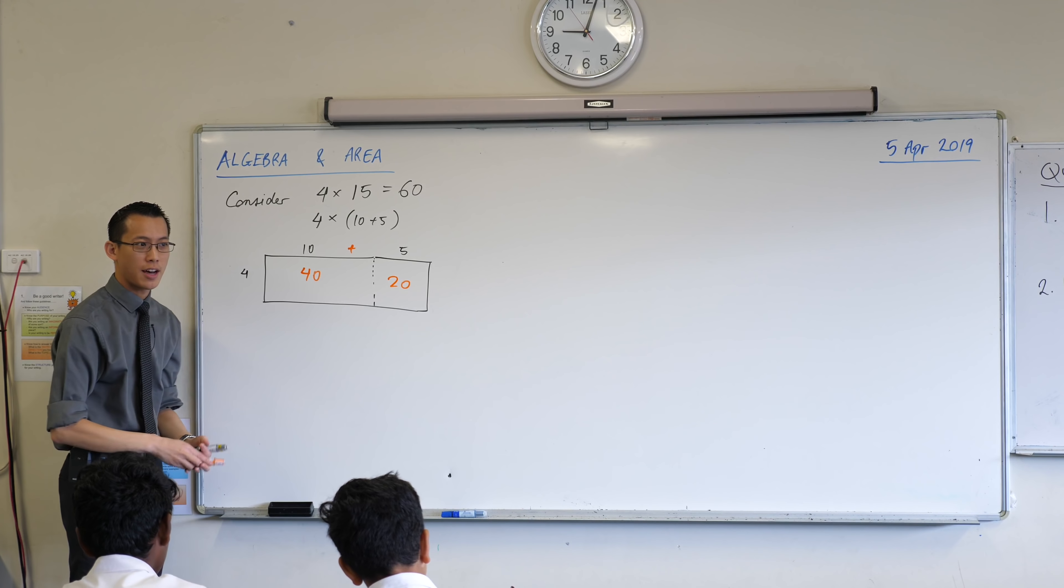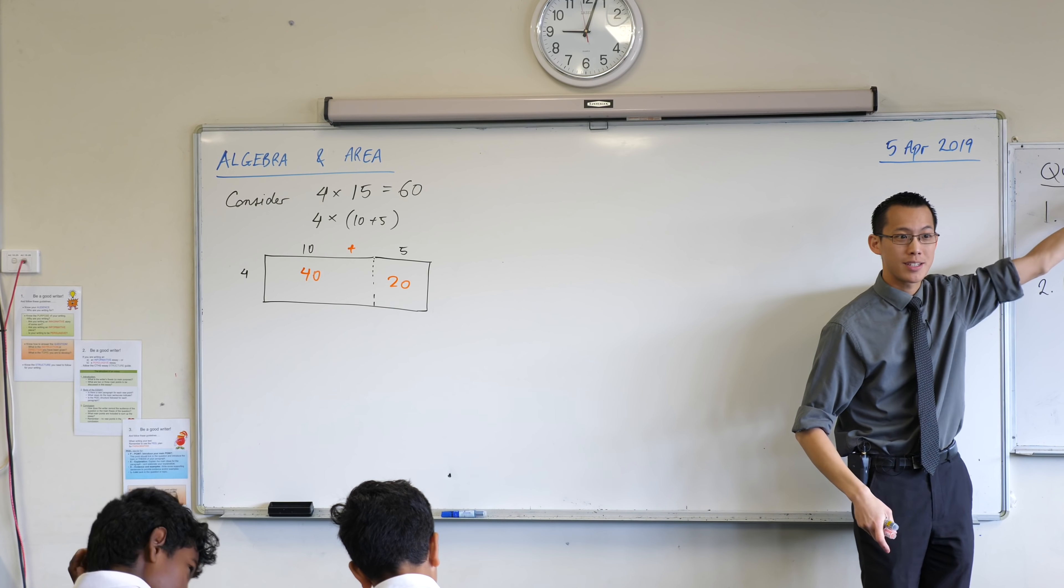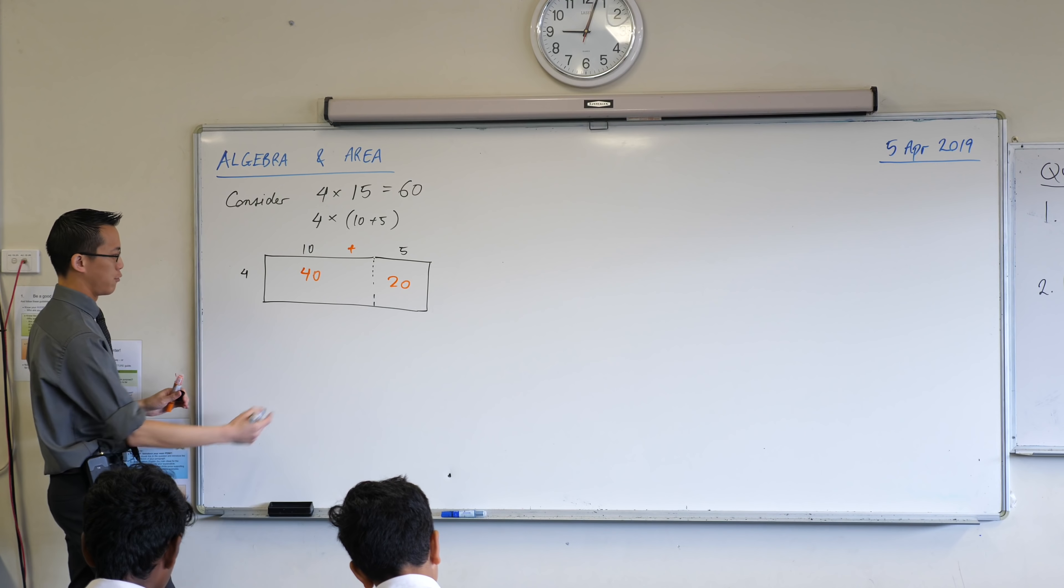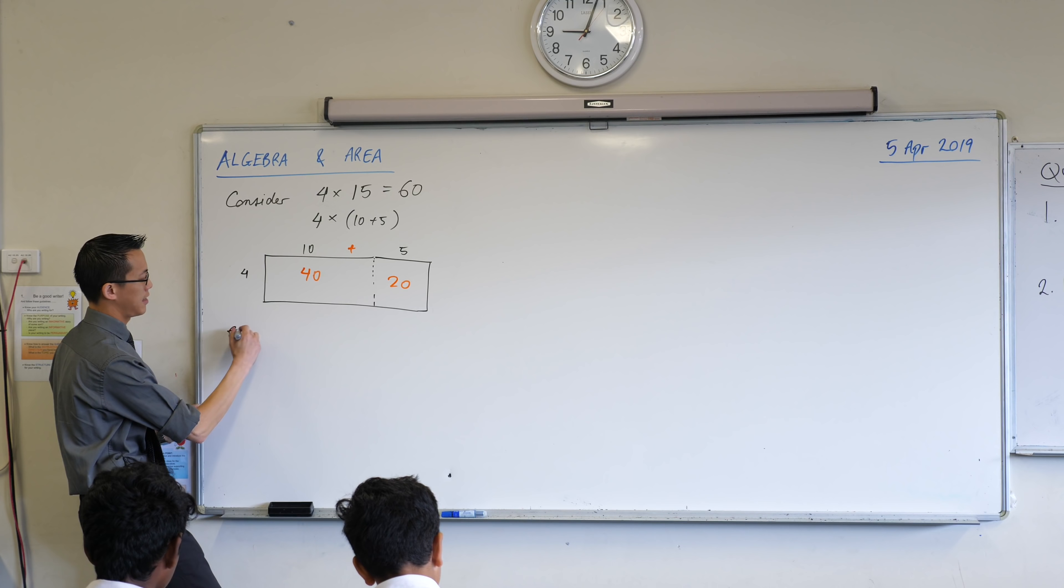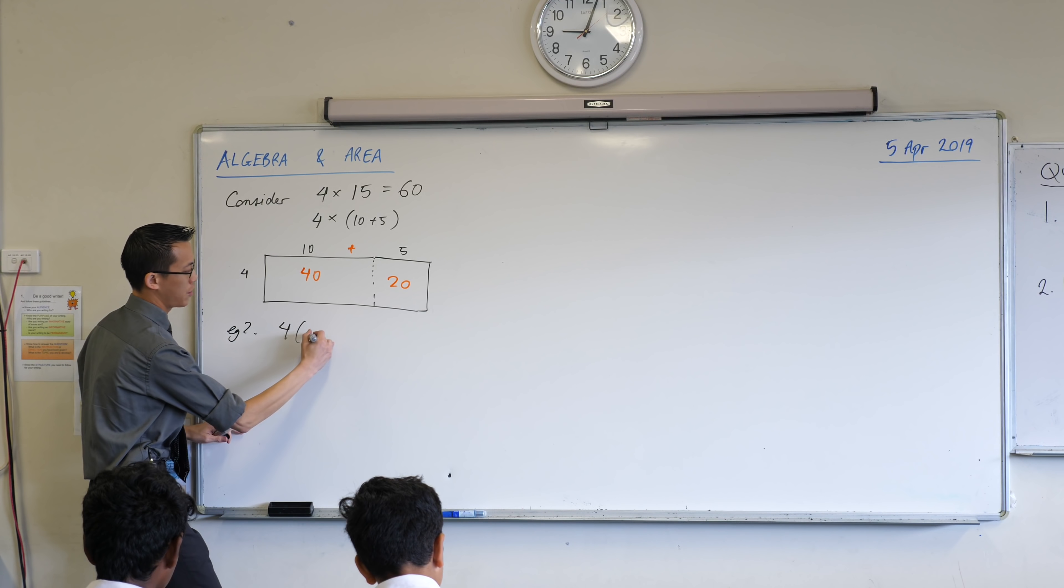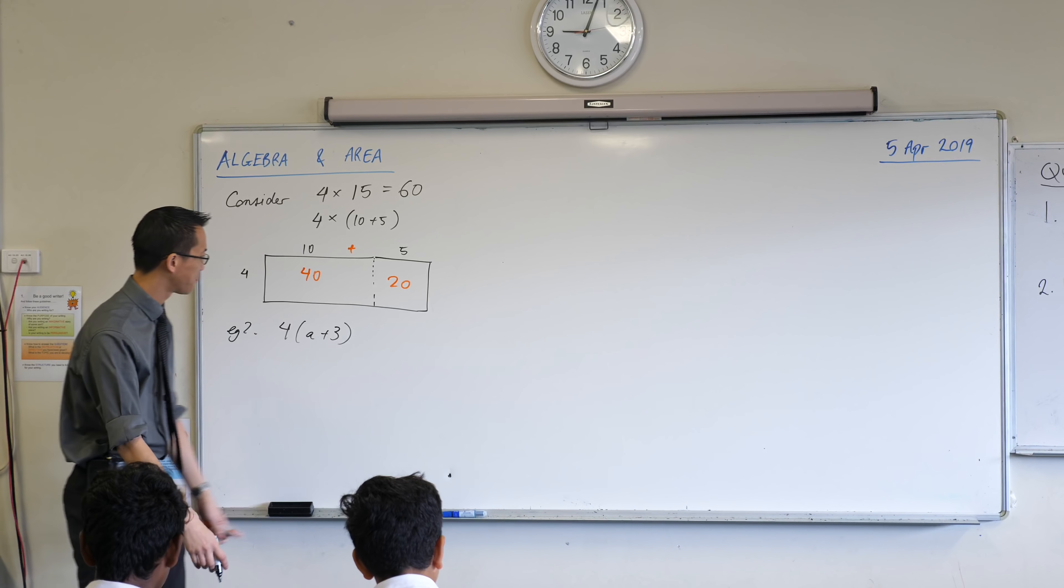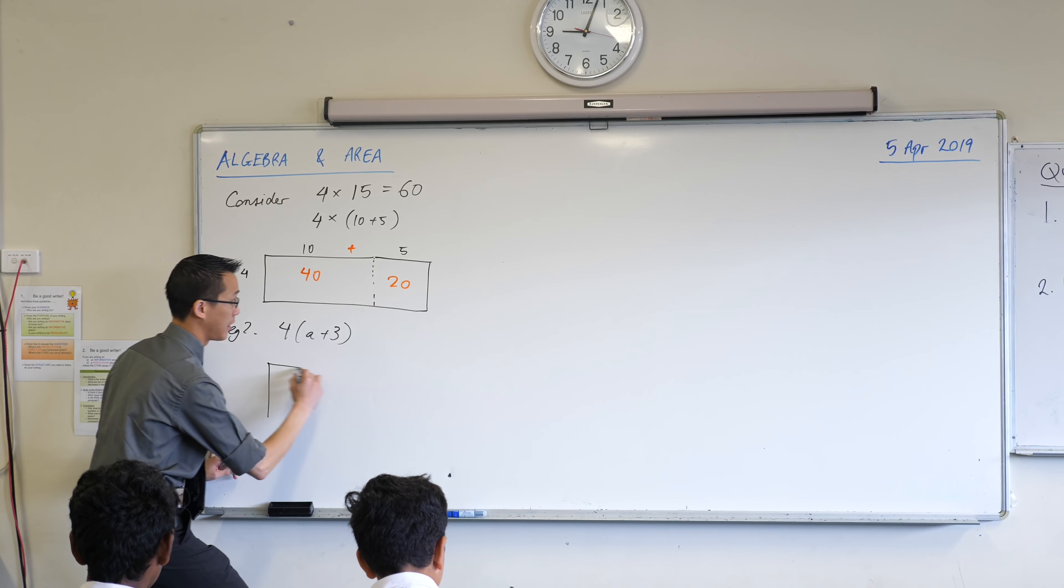Now this is nice with numbers, but we can extend it to algebra because these pronumerals and things we're dealing with, they just kind of stand in the place of numbers. For example, if we said we had 4a minus 3, I'm going to change it. Let's consider 4 with an a plus 3 instead. It's a little bit easier to conceive of here if everything's addition. Can you draw for me the same rectangle, but just we're going to label it differently?